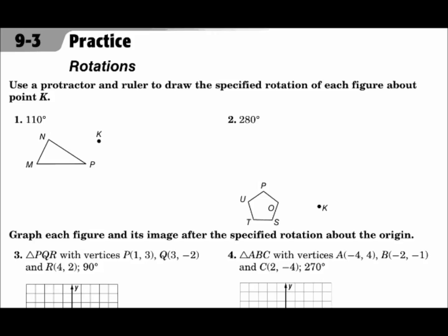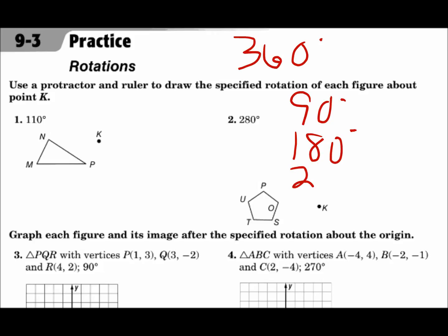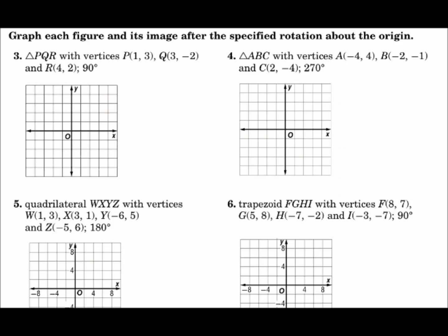It's also important to keep in mind that a complete rotation — a full circle — is 360 degrees, and each quarter of that is a multiple of 90: 90, 180, 270, and then 360 degrees for a full circle. Pay attention to the amount it says to rotate, and if it doesn't say which direction, go clockwise. But if it says to go counterclockwise, make sure you do that.